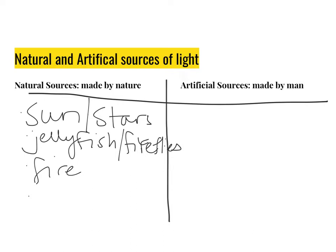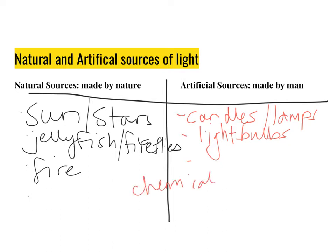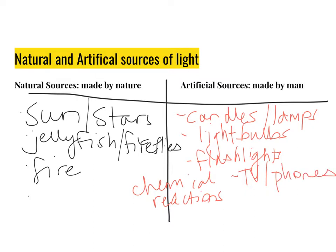But moving on, we also have artificial sources, which are made by man. So things that we've made. We can include stuff like candles, and lamps, light bulbs. We can include, oh, in between, we can actually include chemical reactions. Some chemical reactions are produced by nature. Others are produced by us. We have, again, fire, flashlights. We have TVs and your phones. And many other things as well. So see if you can add a few more examples to natural and artificial sources.